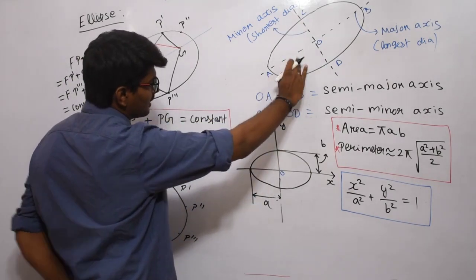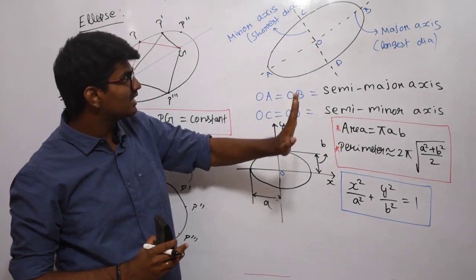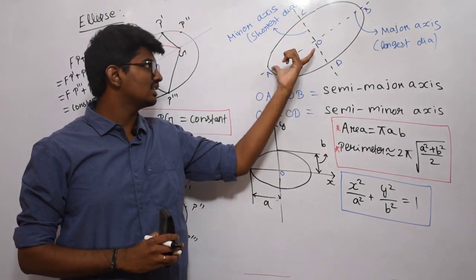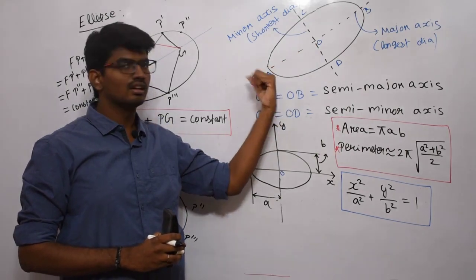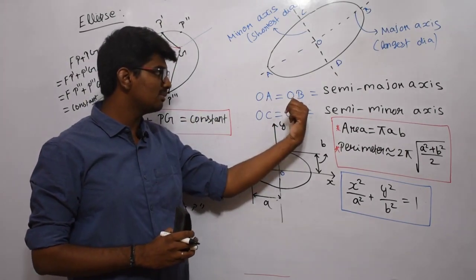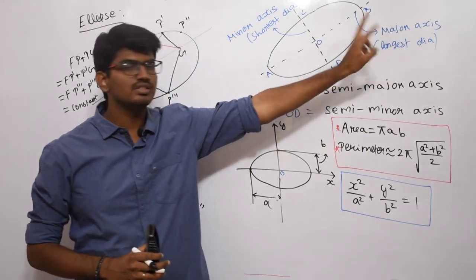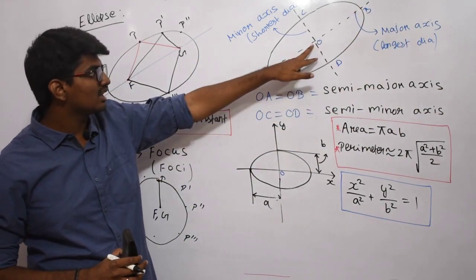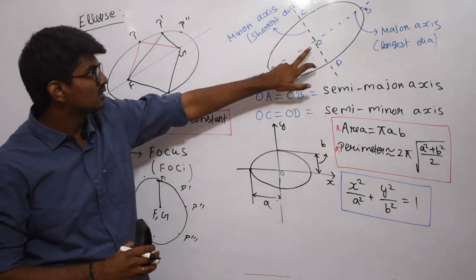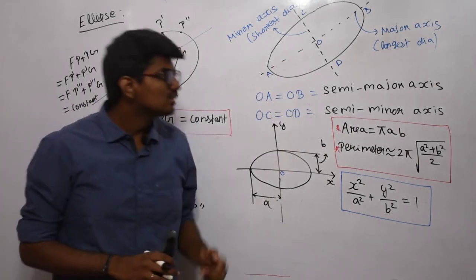The ellipse is symmetric about both the major axis and minor axis. The distance from the minor axis to one end will be the same as the distance to the other end. So OA equals OB, which is nothing but the semi-major axis, equal to half of the major axis. Similarly, the ellipse is also symmetric about the minor axis, so OC equals OD, which is the semi-minor axis.